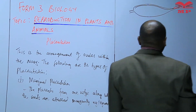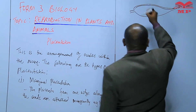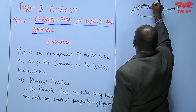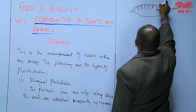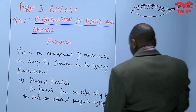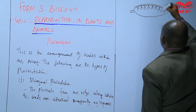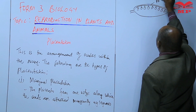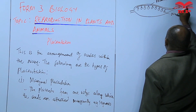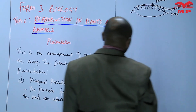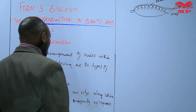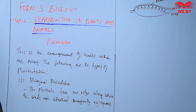The placenta is one ridge along the margin, and along that ridge we have the ovules or seeds attached. So this is the placenta, and then we have the ovules attached along that ridge or margin. We refer to that as marginal placentation.